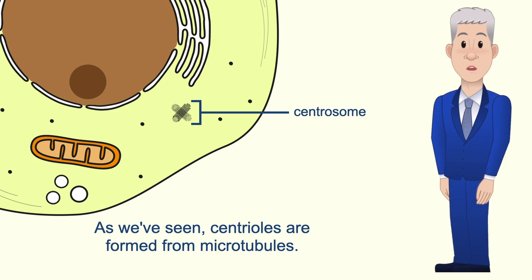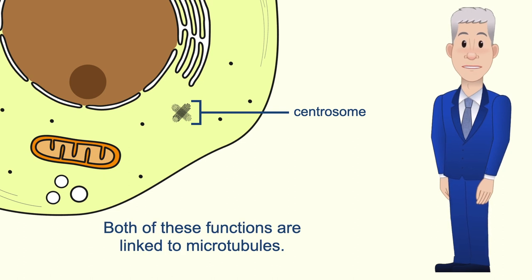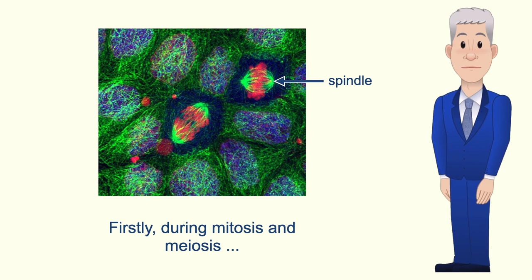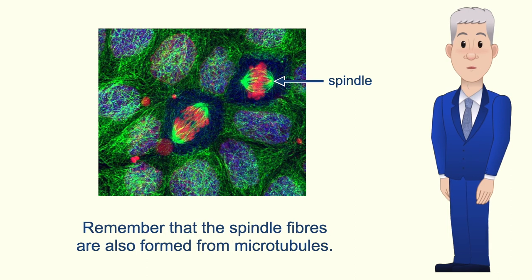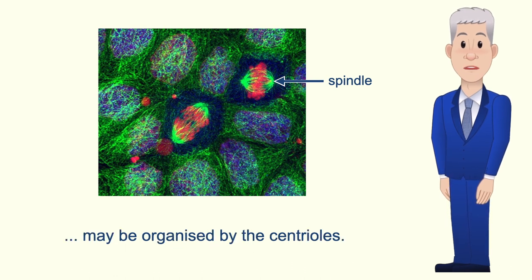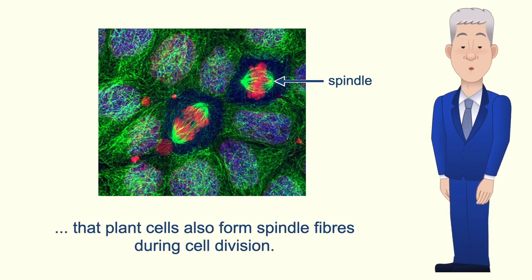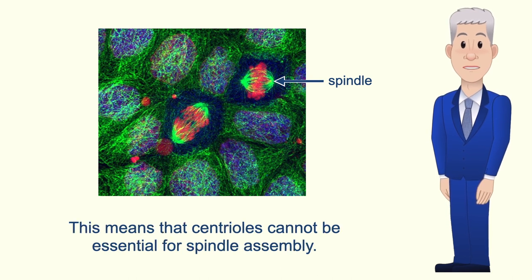Centrioles are formed from microtubules and have two important functions, both linked to microtubules. Firstly, during mitosis and meiosis, centrioles play a role in the assembly of the spindle fibers. The spindle fibers are also formed from microtubules, and how these microtubules are arranged into spindle fibers may be organized by the centrioles. However, plant cells also form spindle fibers during cell division but flowering plant cells do not contain centrioles, meaning centrioles cannot be essential for spindle assembly.